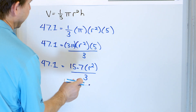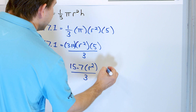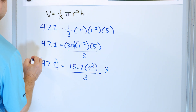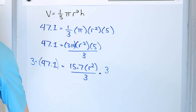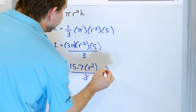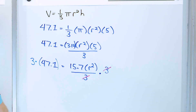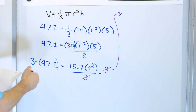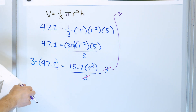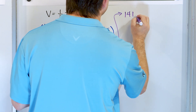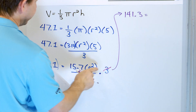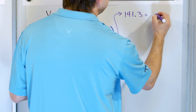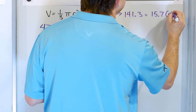How do we make progress? We need to get rid of the 3. So we multiply both sides by 3. On the right-hand side, the 3s cancel, which is exactly what we wanted. So 3 times 47.1 works out to 141.3, and that's equal to 15.7 times r squared.